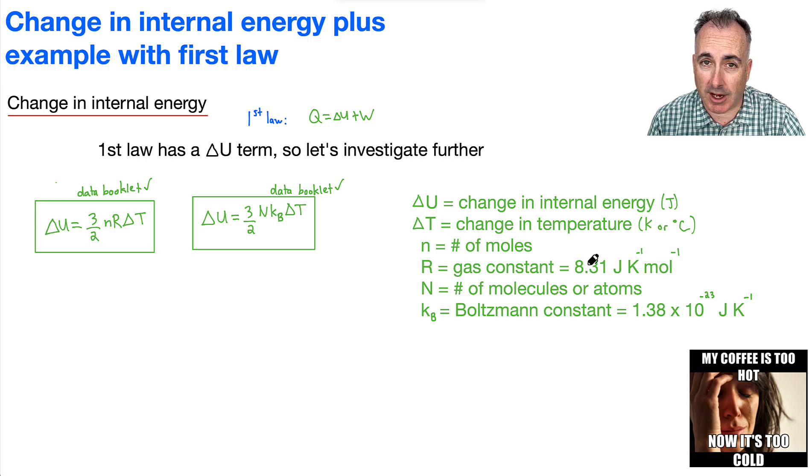R is the gas constant, 8.31 joules per Kelvin per mole. We've got capital N, which is the number of molecules or atoms. And we've got K subscript B, which is Boltzmann's constant, 1.38 times 10 to the minus 23 joules per Kelvin.